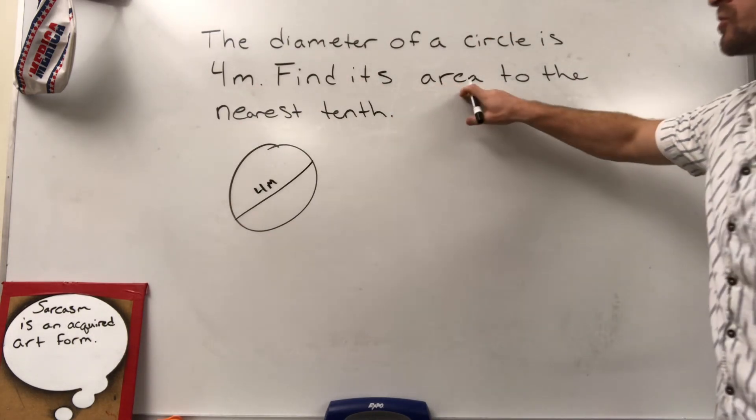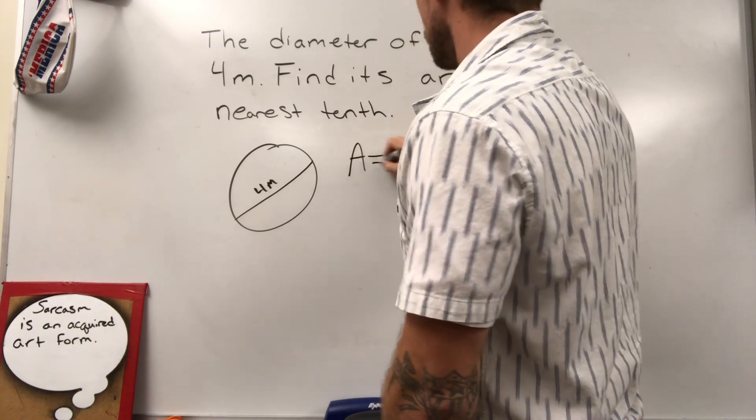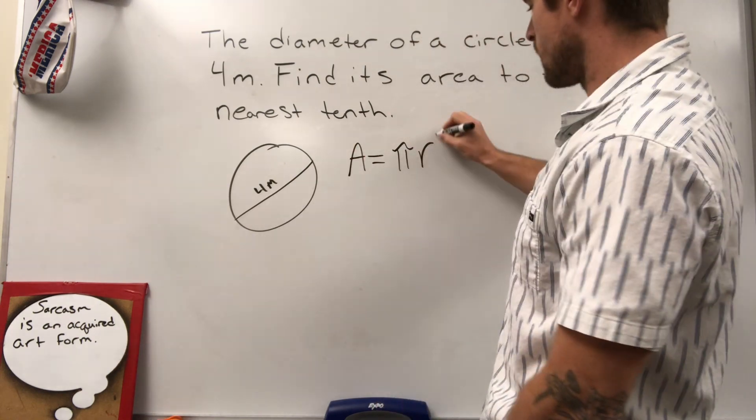Okay, so area of a circle. If you're not sure what area of a circle is, area equals pi r squared.